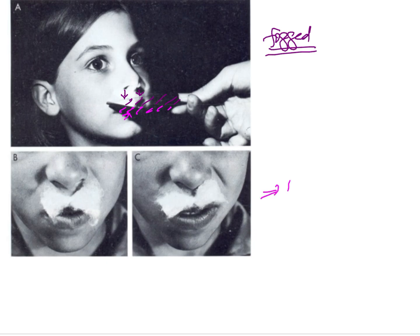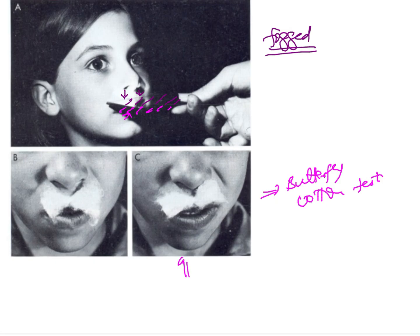The second clinical test is the butterfly cotton test. In this, a wisp of cotton is placed over the upper lips. If breathing is taking place through the nasal passage, it will cause a change in the position of the cotton because it will move away by the force of air. As seen in figure C, the cotton on one side has been displaced from its position, showing that one nostril is open but the other nostril is closed.